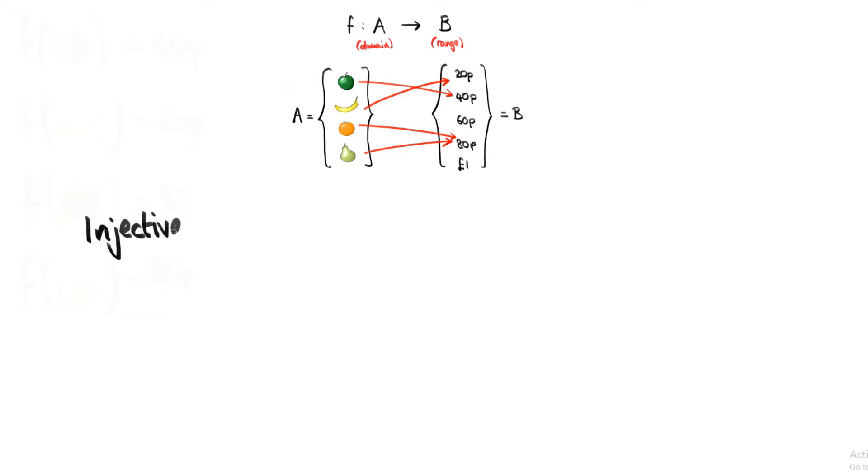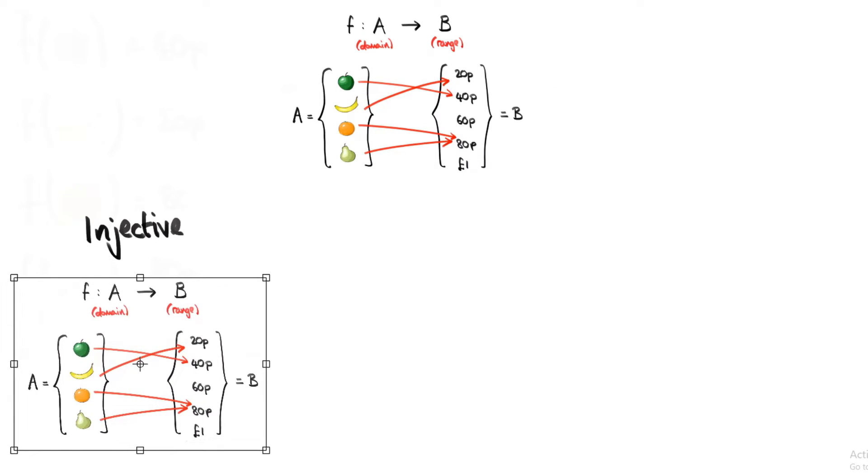An injective function is a function where there's only ever one arrow going into any element in B. In other words, there are no greedy elements in B. That means we can't have the situation that we have in our original function, where we have two arrows pointing in towards 80p.